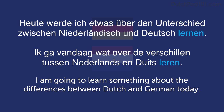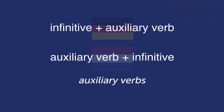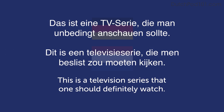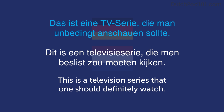The exact V2 word order is slightly different between Dutch and German. When it comes to auxiliary verbs, the order in Dutch is auxiliary verb plus infinitive. In German it's the opposite: infinitive plus auxiliary verb. For example: 'This is a television series that one should definitely watch.' In Dutch: 'dit is een televisieserie die men beslist zou moeten kijken'. In German: 'das ist eine TV-Serie die man unbedingt anschauen sollte'. Note how in Dutch it's 'moeten kijken' and in German it's 'anschauen sollte'.